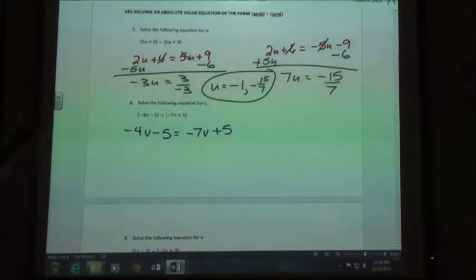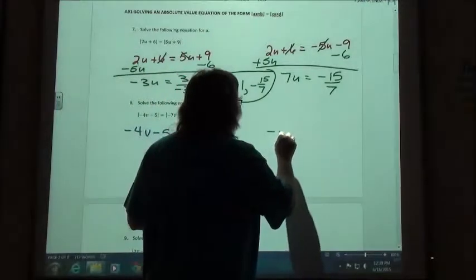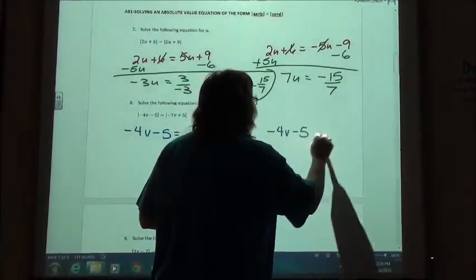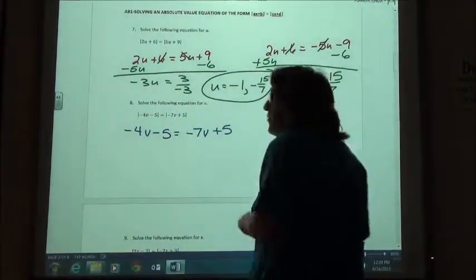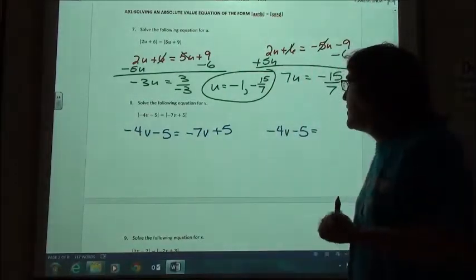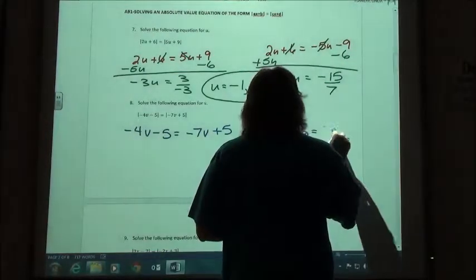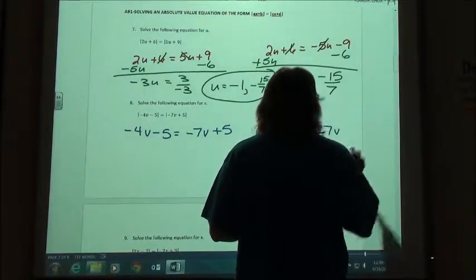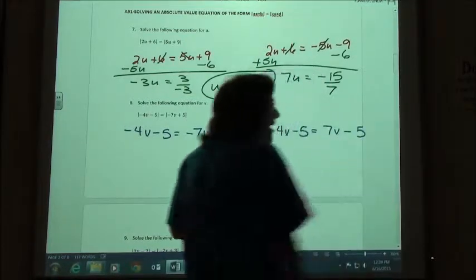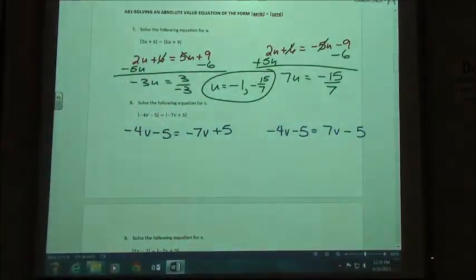My other problem, I'm going to leave the left side the same, so negative 4v minus 5. I'm going to do the opposite of the right side, so what should I have on the right side? Positive 7v and a negative 5, right? Change both of those signs.